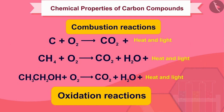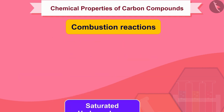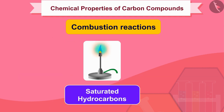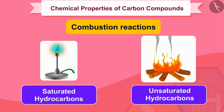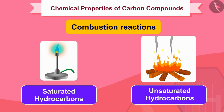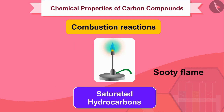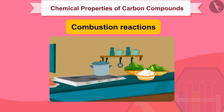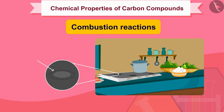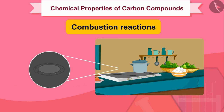Saturated hydrocarbons will generally give a clean flame, while unsaturated carbon compounds will give a yellow flame with lots of black smoke. However, limiting the supply of air results in incomplete combustion of even saturated hydrocarbons, giving a sooty flame. The gas or kerosene stove used at home has inlets for air so that a sufficiently oxygen-rich mixture is burnt to give a clean blue flame.